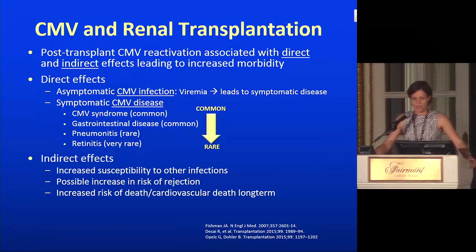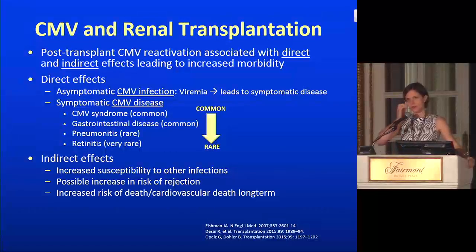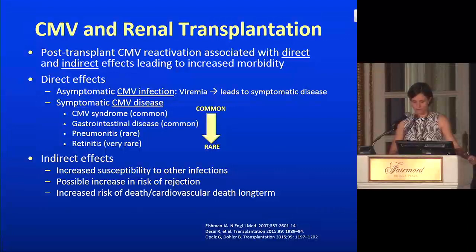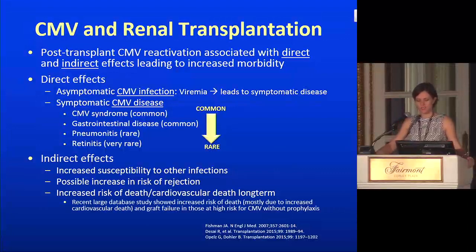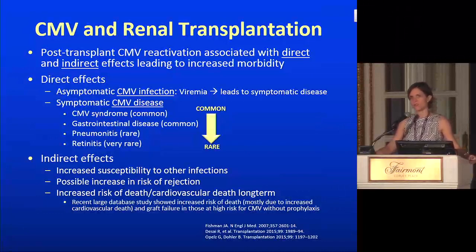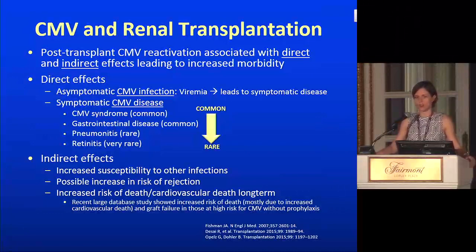The indirect effects of CMV: we already talked about how it can increase vulnerability to other infections. It's also possible that CMV stimulates the immune system in a way that increases your risk for rejection. Most recently, people have been caring a lot about the increased risk of death or cardiovascular death long-term. Recent database studies have shown an increased risk for death — mostly related to cardiovascular death — and graft failure in high-risk CMV patients who did not receive prophylaxis.